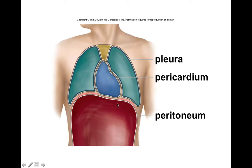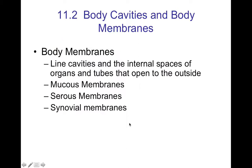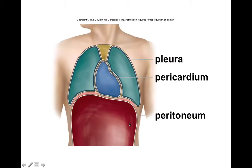The diaphragm separates the thoracic cavity from the abdominal cavity. The abdominal cavity is lined by a membrane called the peritoneum. You want to be familiar with the peritoneum, the pericardium, the diaphragm, and the pleural membrane.